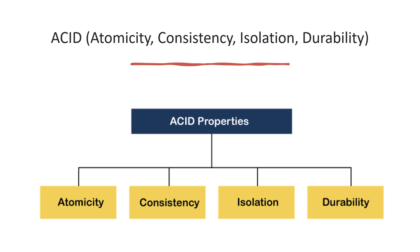Let's dive into ACID — Atomicity, Consistency, Isolation, and Durability. That's what ACID stands for. These properties collectively ensure the reliability and integrity of transactions, even in the face of system failures or errors. Let's dive deeper into each of these properties.